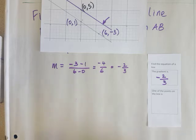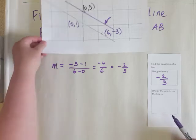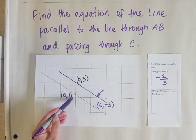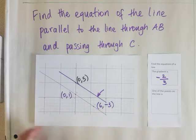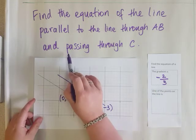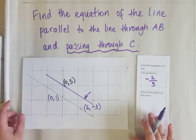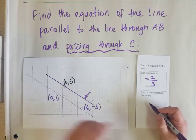Next, I want to write down one of the points on the line. So the question is, which point am I going to use? Is it this one? Is it this one? Or is it this one? Is it A, B or C? The question tells me the line I want is passing through C. So one of the points on the line is this C point here, (0, 5).